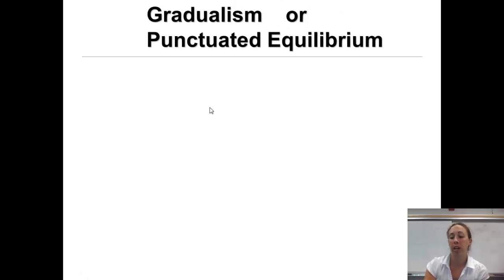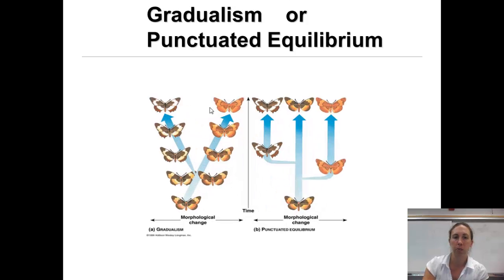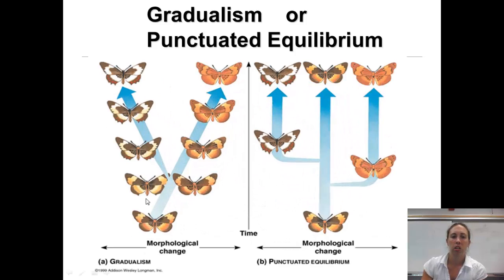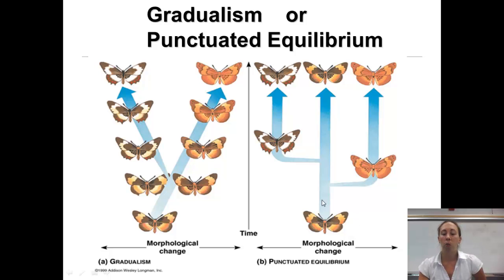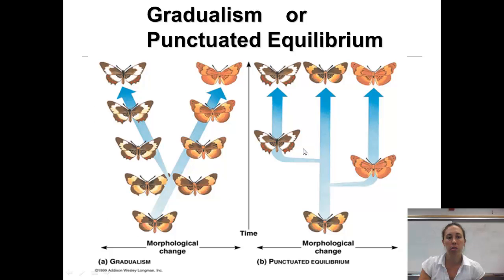Let's compare gradualism and punctuated equilibrium with butterflies. In gradualism, you have one common ancestor and changes occur slowly over time. In punctuated equilibrium, you have one butterfly that stays the same for a long period of time, and then all of a sudden you get two different butterflies at the same time.